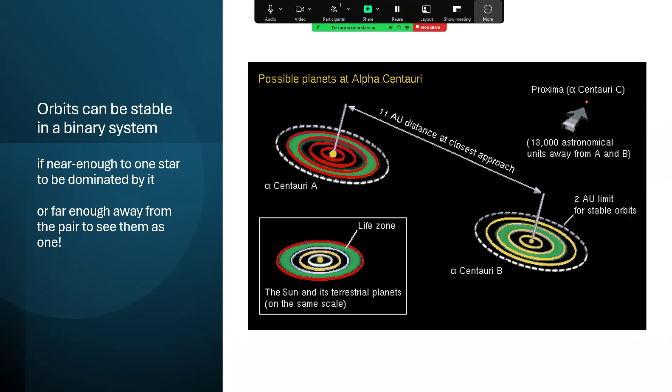And of course, the other option for orbits in a binary system is really what Proxima Centauri, the little red dwarf, is doing. That is 13,000 astronomical units away, far enough away from the A-B pair that essentially it treats them as a single gravitating central mass. And the distance between them is so small, it's less than one part in 1,000 after all, so it can just ignore the fact that there's a double there at all. And you can do that as a planet. You can orbit around a pair at a long distance.